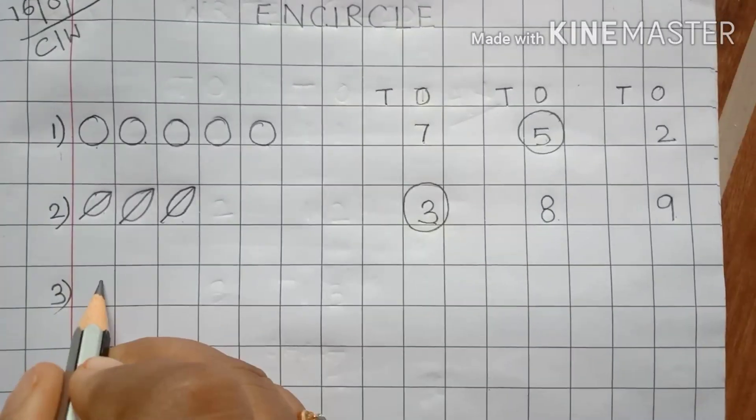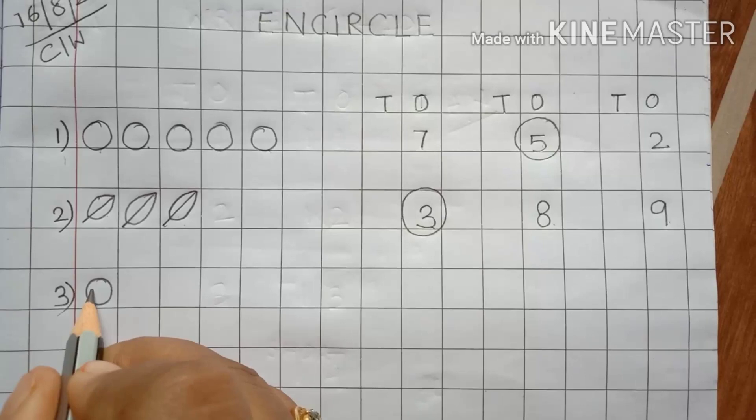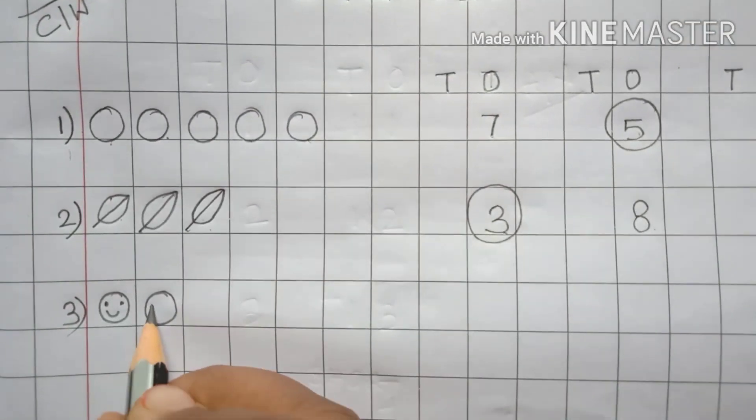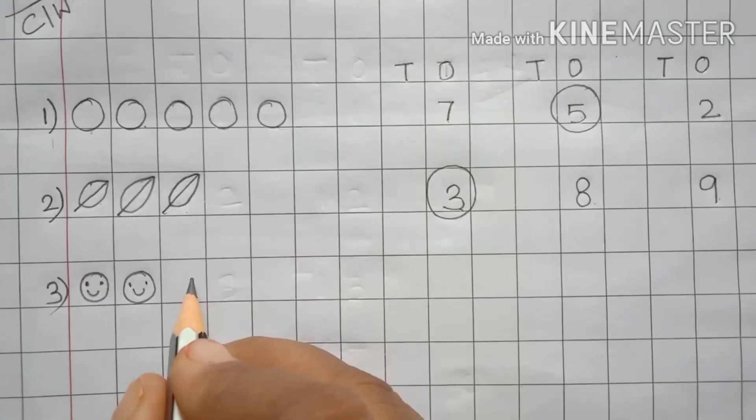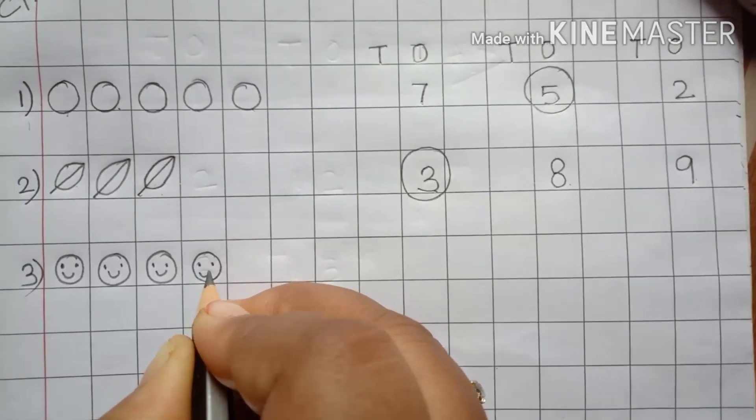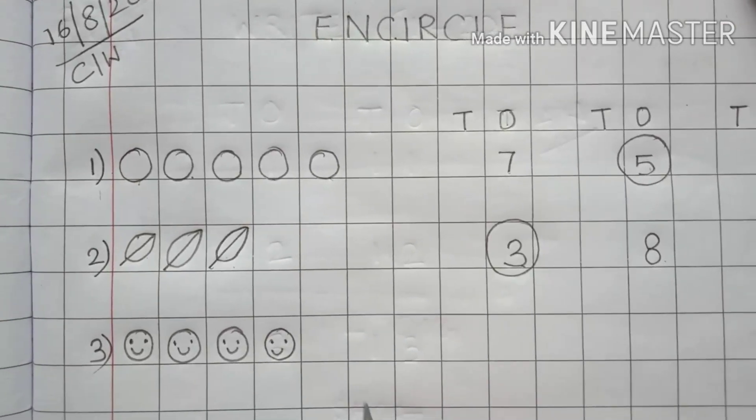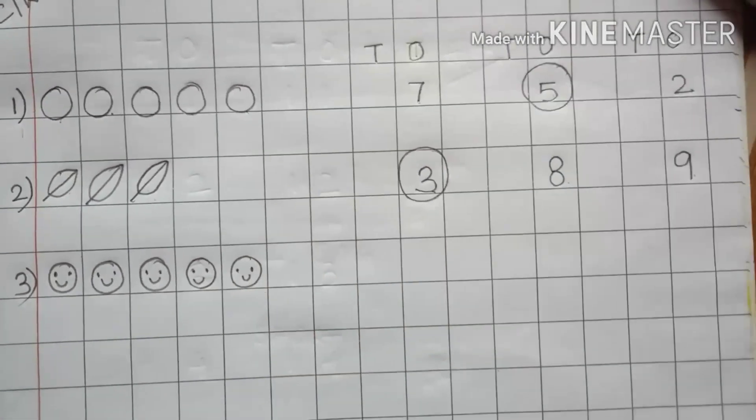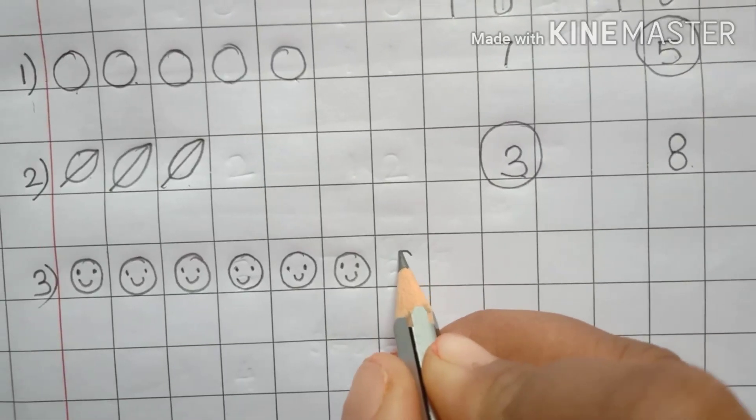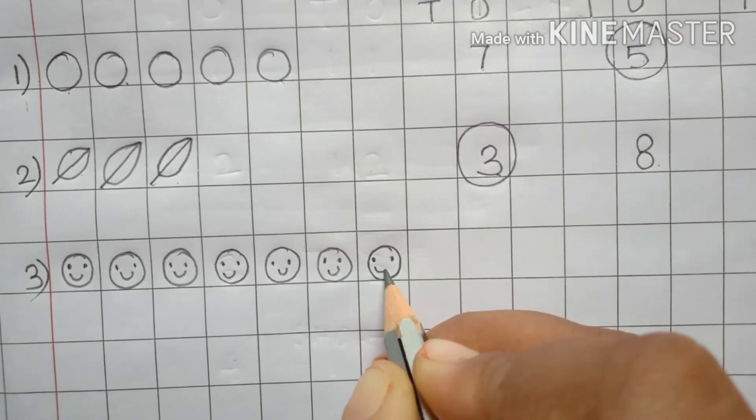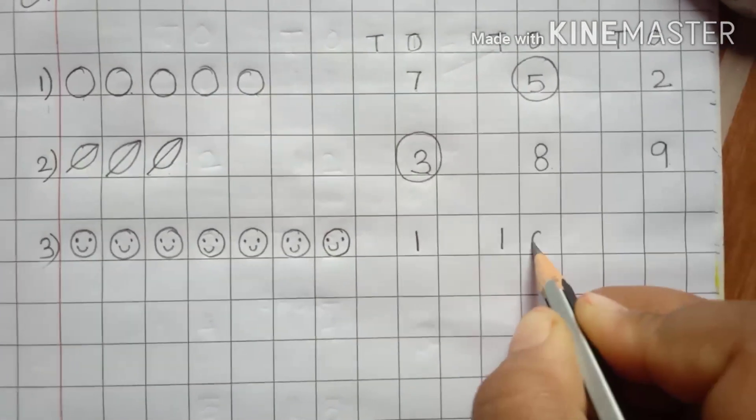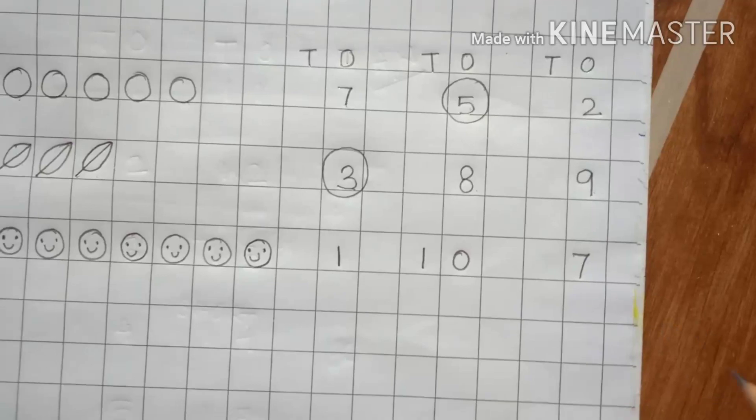Now let's come to number 3. Now let's draw smiley face. 1 smiley, 2 smileys, 3. Draw a circle. Give 2 dots and then the smiley is done. 1, 4, 5, 6, 7. Now the same way we will write here random numbers. Suppose we are writing here 1. Then 10 under 1s and here 7.